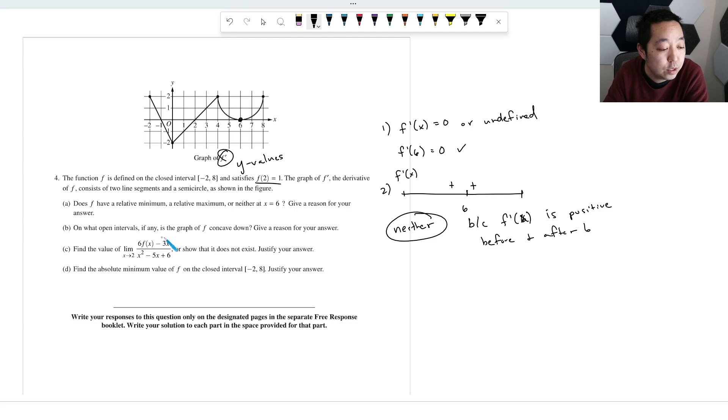On what open intervals, if any, is the graph f concave down? So concave down is going to be where the second derivative is negative. So that's where it's concave down. Now, in that context, that means the slopes, how does f double prime look on a graph of f prime? It is the slopes of f prime that are less than zero. And where does that occur? Where are the slopes negative?